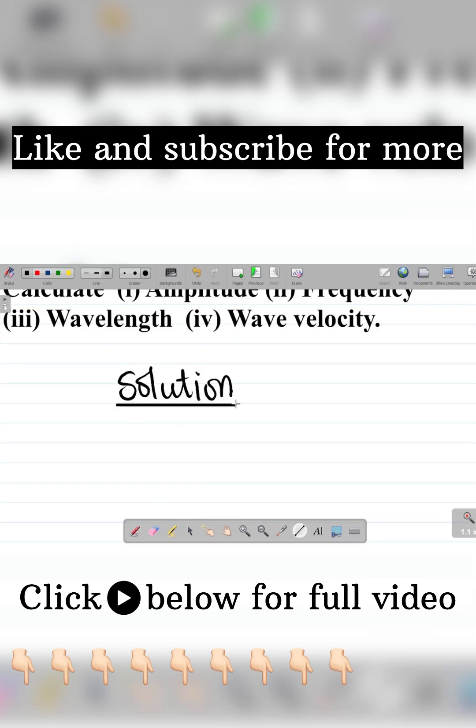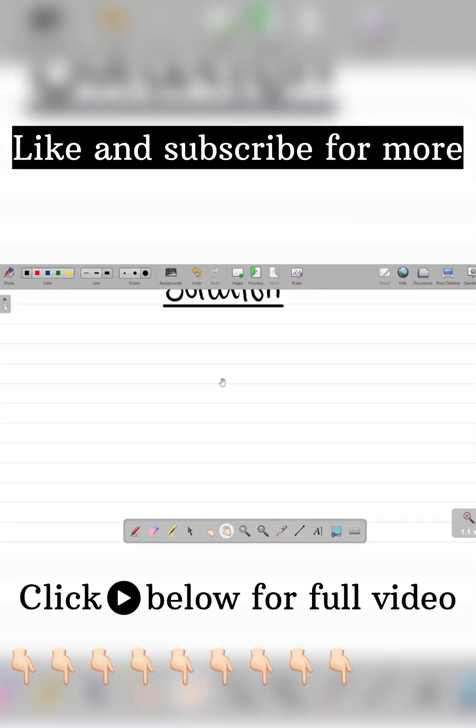And we said for your wave equation, the first thing you do is to write out the original wave equation. And the original wave equation is given by y being equal to a sine, sine in brackets, 2 pi.